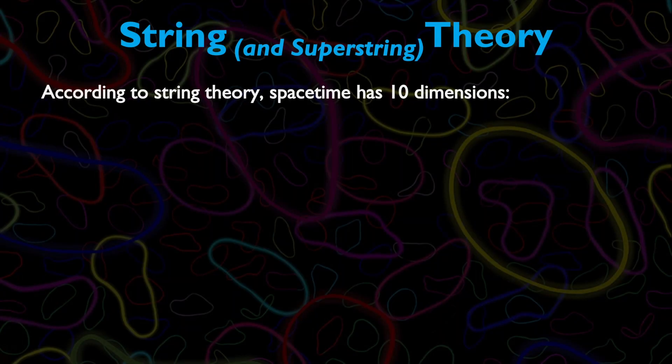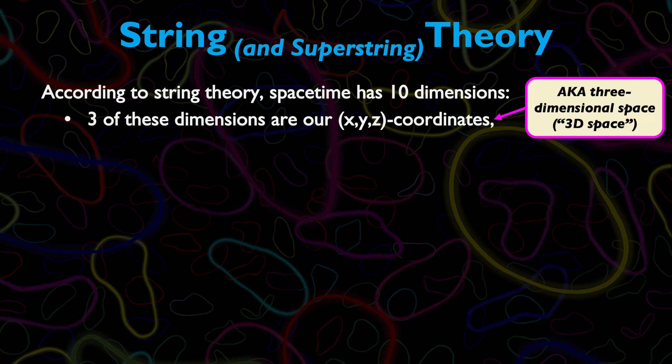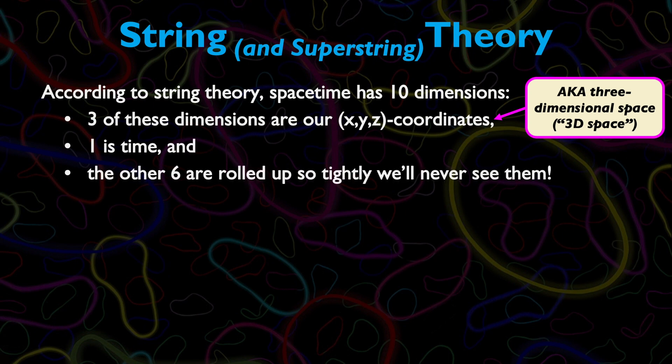According to string theory, space-time may have as many as 10 dimensions, four of which are already accounted for. Three are our typical x, y, z coordinates of physical space, otherwise known as three-dimensional or 3D space. Another is time, and the remaining six are rolled up so tightly together that we'll never see them.